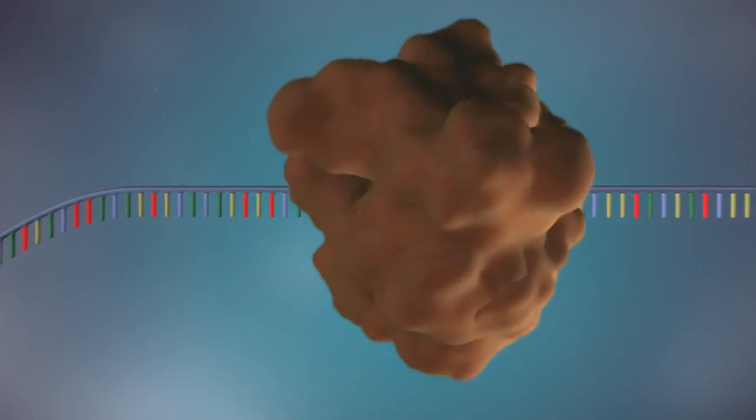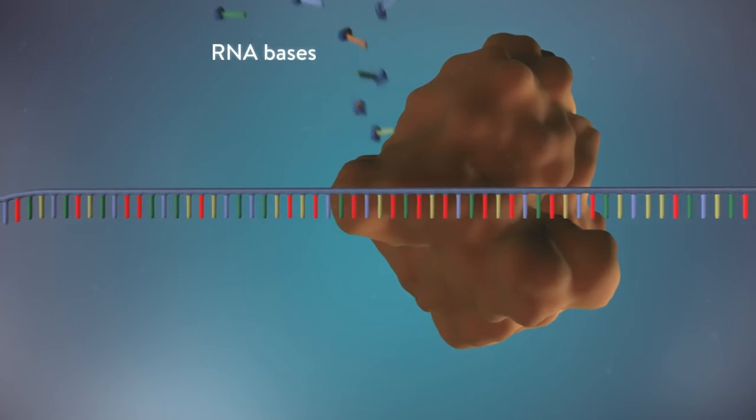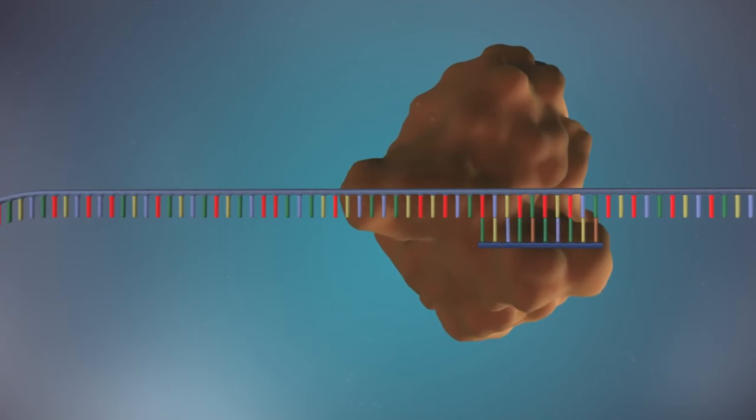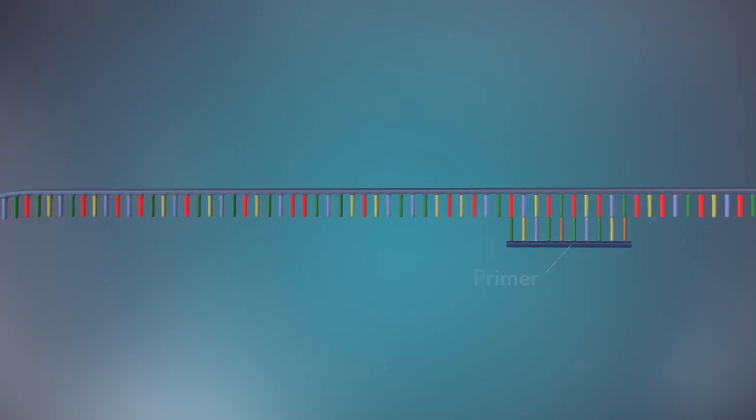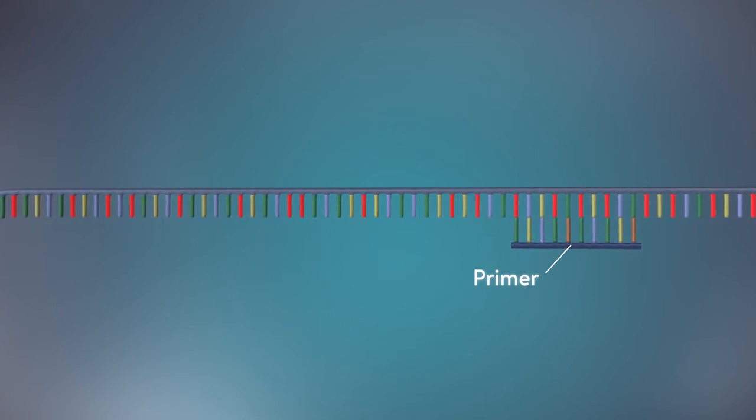An enzyme called primase starts the process. This enzyme makes a small piece of RNA called a primer. This marks the starting point for the construction of the new strand of DNA.